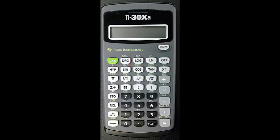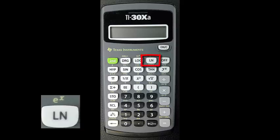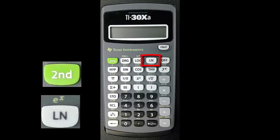The button you will use for the natural logarithm is the LN button. The inverse of the natural logarithm is also accessed with the second function button. The inverse of the natural logarithm is labeled e to the X.